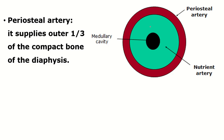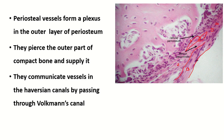This picture shows the blood supply of the compact bone: the inner two-thirds is supplied by the nutrient artery and the outer one-third is supplied by the periosteal artery.